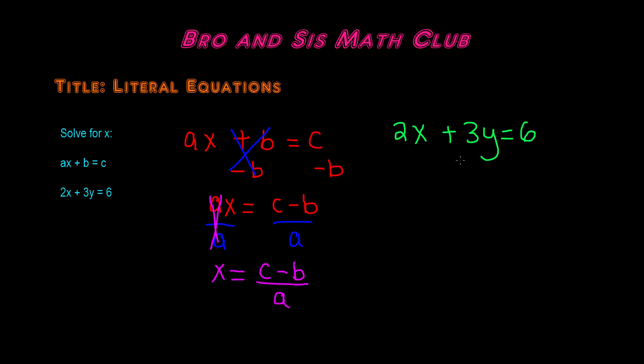Remember, we're trying to solve for the variable x, so we need to undo anything that's being done to the variable x. Since 3y is being added to x and 2 is being multiplied to x, we need to get rid of these.